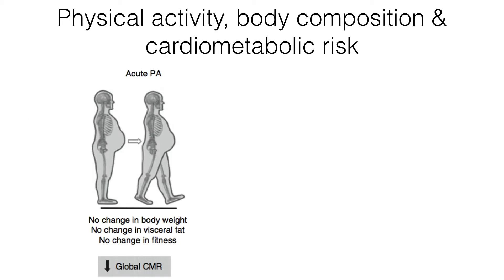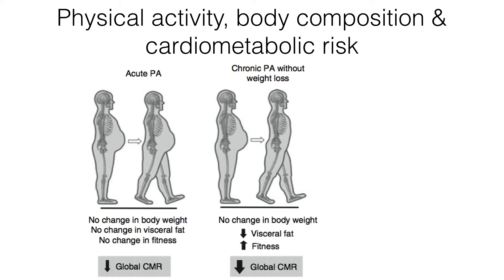Many people are interested in physical activity's effect on body composition, not just cardiometabolic risk. Being active just once won't change body weight, visceral fat, or fitness, but there is immediately a reduction in global cardiometabolic risk — though that reduction won't last. Chronic or regular activity, even without weight loss — even if weight on the scale stays the same — will change body composition: visceral fat goes down, fitness goes up, predominantly the type we're training. And there's an even bigger reduction in global cardiometabolic risk.